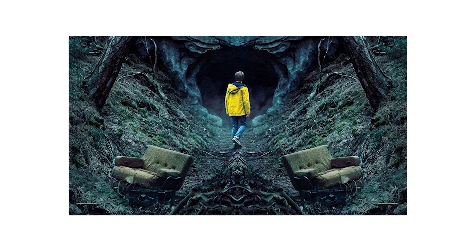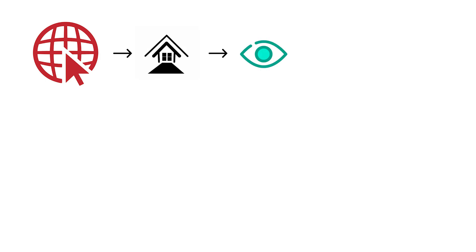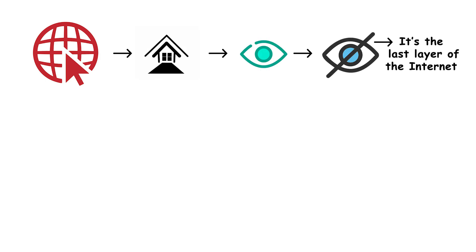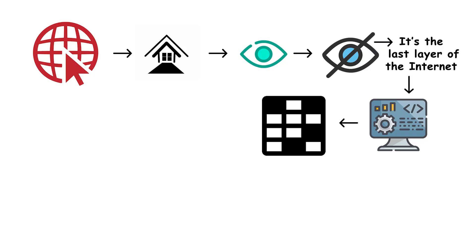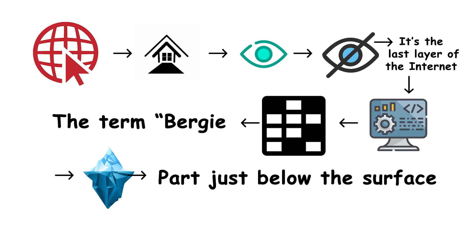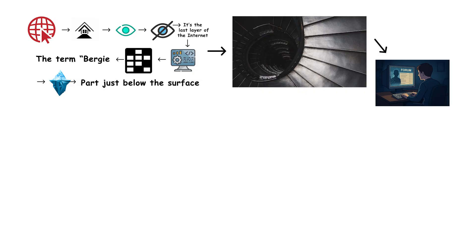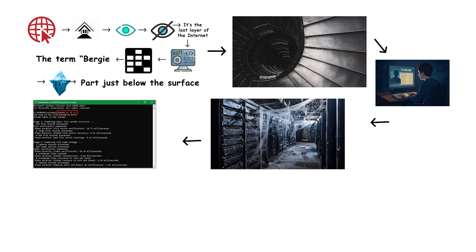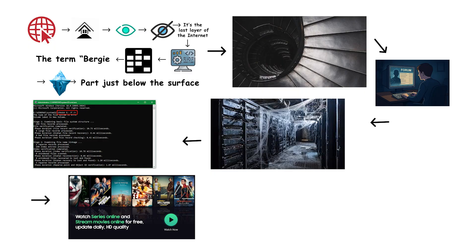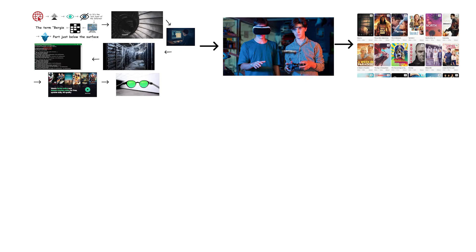Now we're moving past what most people even know exists. This is the Bergeweb — the halfway house between the visible and the invisible. It's the last layer of the internet that you can still reach without specialized software, and yet it's already fading from the map. The term comes from iceberg — the part just below the surface. It's where the internet begins to hide in plain sight. Here, you'll find forgotten forums, abandoned file servers, unindexed archives, and websites technically public but practically invisible — online, but you'd never find them without knowing the exact address.